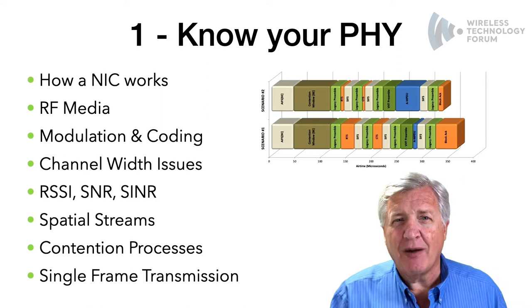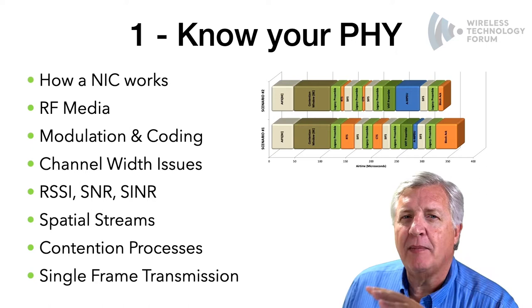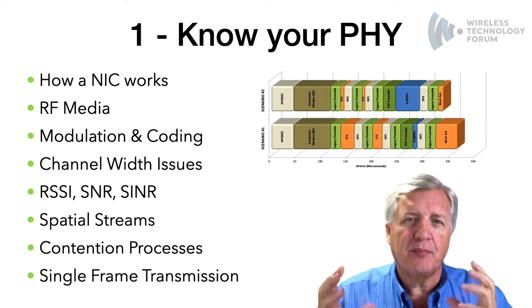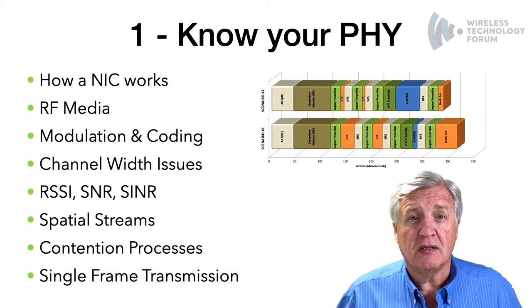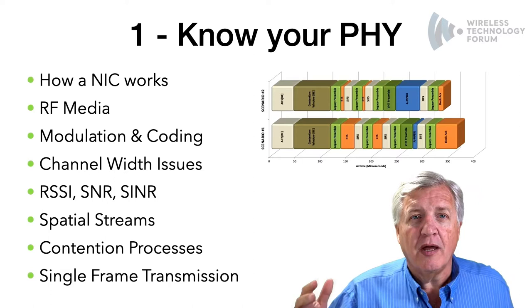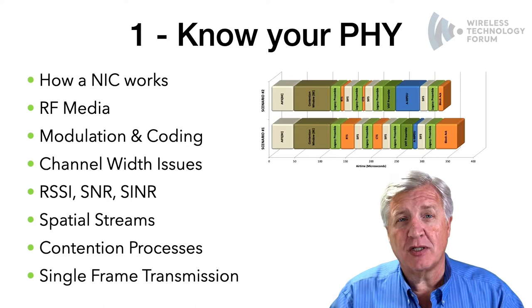We need to understand RF media — how it works, the whole modulation encoding scheme, and what happens when you change from a 20 to a 40 to 80 MHz wide channel. Don't get suckered into thinking there's something magic about 80 MHz wide channels — they're obviously four times better, right? No they're not. Spatial streams, modulation coding, and the entire contention process are what drive your design. Co-channel interference: Wi-Fi 802.11 is 100 times more sensitive to other Wi-Fi than to non-Wi-Fi. Wi-Fi is the number one enemy of other Wi-Fi.